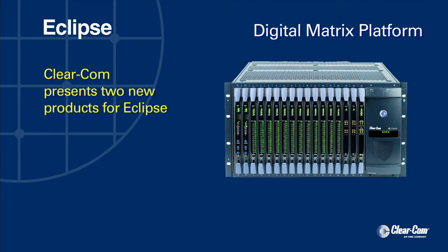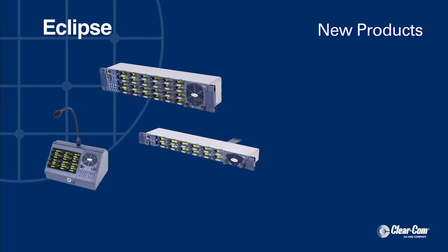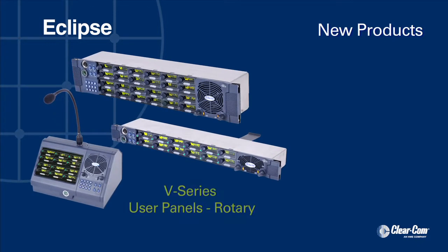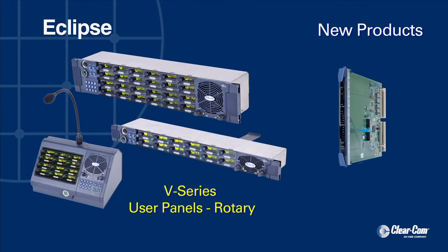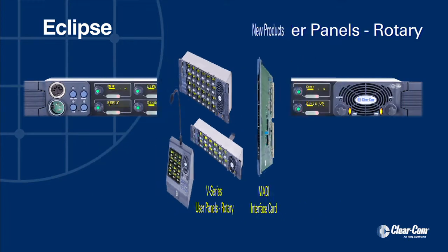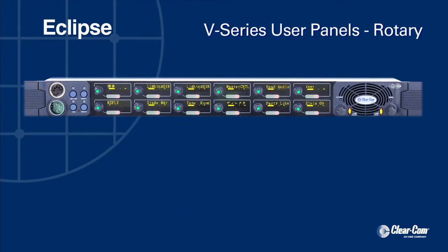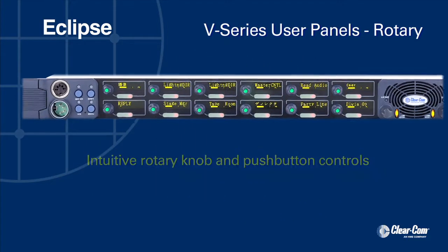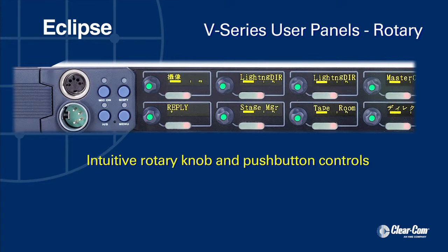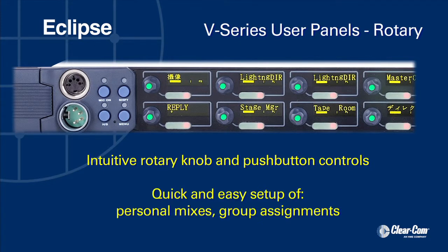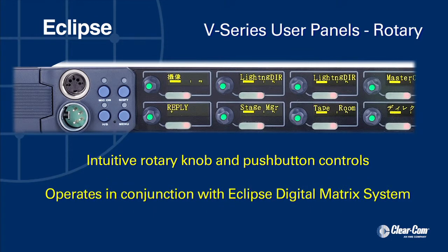Building on the success of the Eclipse platform, Clearcom has developed two new product offerings designed to enhance the user interface experience and expand system functionality. The V-Series Rotary User Control Panel offers intuitive rotary dial knob and push-button controls for quick and easy setup of personal mixes and group assignments operating in conjunction with an Eclipse digital matrix system.